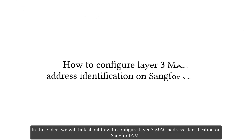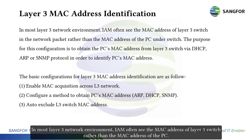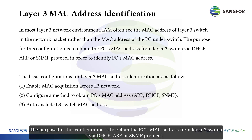In this video, we will talk about how to configure layer 3 MAC address identification on SAN for IAM. In most layer 3 network environments, IAM often sees the MAC address of the layer 3 switch rather than the MAC address of the PC. The purpose of this configuration is to obtain the PC's MAC address from the layer 3 switch via DHCP, ARP, or SNMP protocol.